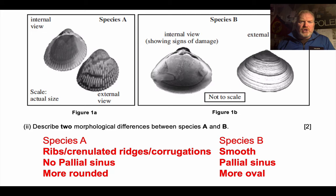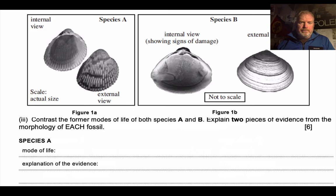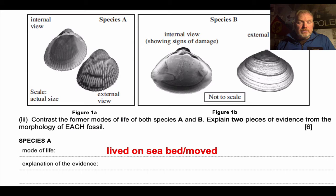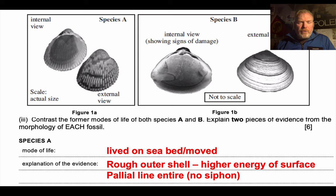If we think about what this means about the mode of life, Species A probably lived on the seabed or maybe just under the seabed, and almost certainly moved around — it was able to propel itself a little bit, similar perhaps to a modern cockle. The evidence we can see from that: the rough outer shell and those corrugations are there to give the shell strength, meaning it must have lived in a high energy environment with a greater need to resist currents and a greater risk of predators.